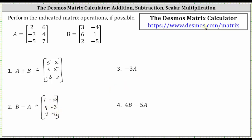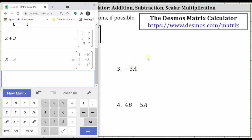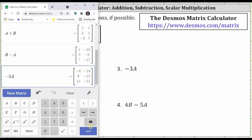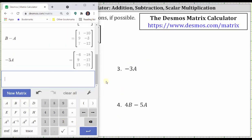For number three, we have scalar multiplication. We have negative three times matrix A. Going back to the calculator, we enter negative three A. Enter, and we have the result.